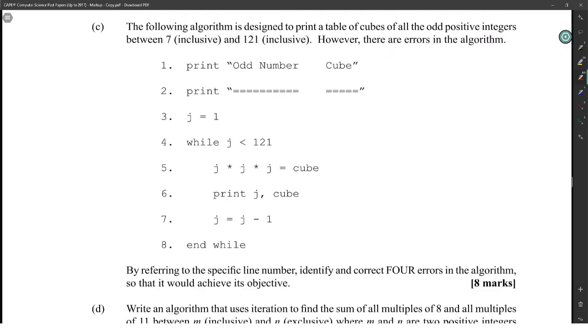The following algorithm is designed to print a table of cubes of all the odd positive integers between 7 and 121 inclusive. However, there are errors in the algorithm. By referring to the specific line number, identify and correct four errors in the algorithm so that it would be able to achieve its objective. Four errors in this algorithm would be, let's see. Print odd number cube. Line 1 and 2 seems okay because it just prints the heading.